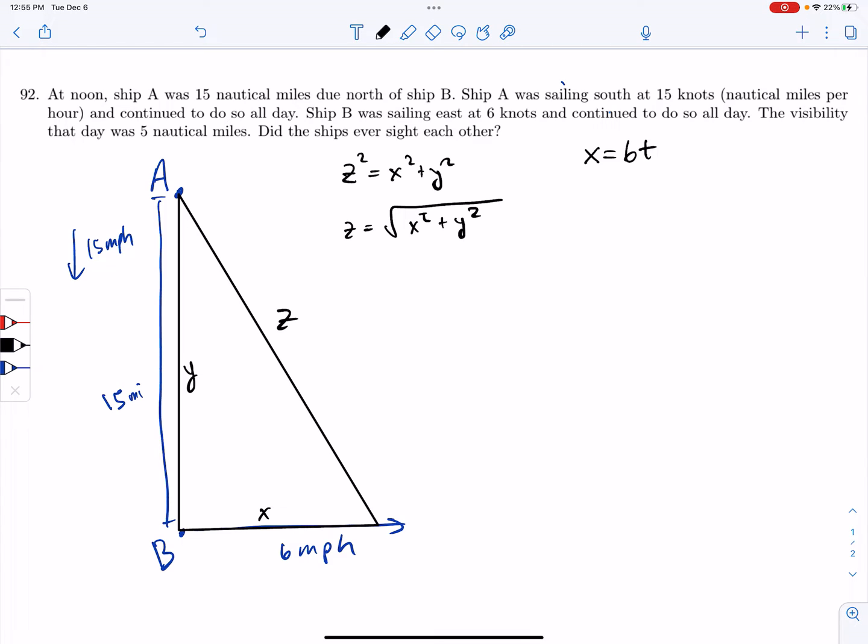So that's going to be 6T, right? Every hour, or however much time has passed in hours, the ship has traveled six miles. So X can equal 6T.